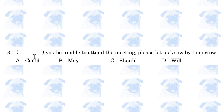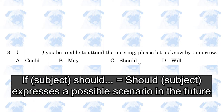Blank you be unable to attend the meeting, please let us know by tomorrow. The answer is C, should you be unable to attend the meeting. The modal verb 'should' can express a possible scenario. You can say 'if you should be unable to,' but you can also omit the conjunction 'if' and move the modal verb 'should' to the front of the sentence, as in 'should you be unable to.'